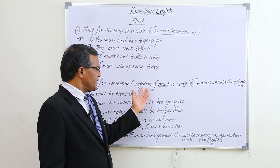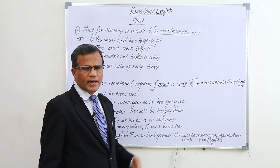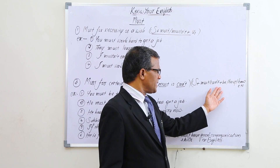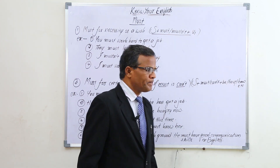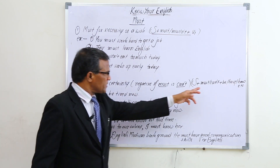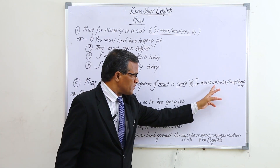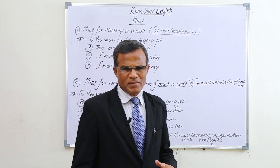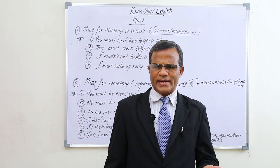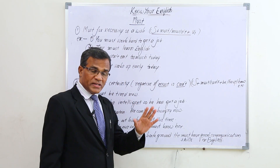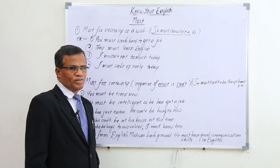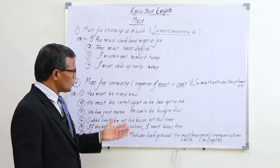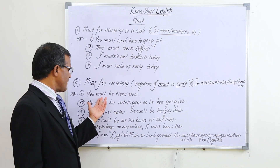For 'must' expressing certainty, the negative form is 'can't.' The structure is: subject plus must or can't plus be/have/know etc. For example: 'You must be tired now' — when I observe someone who seems very tired, I can say 'You must be tired now; it is better for you to go to bed.'